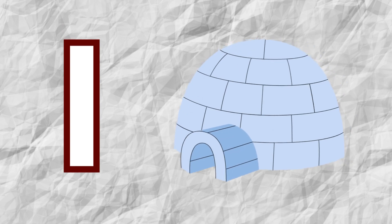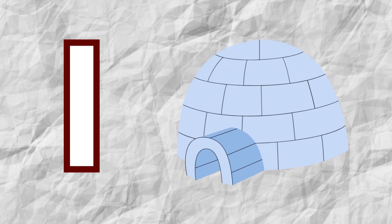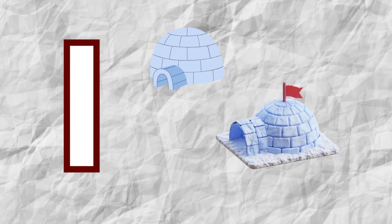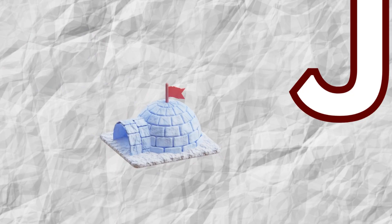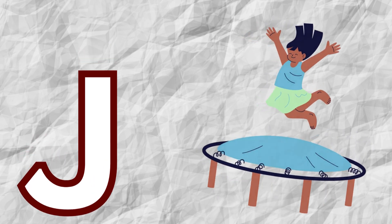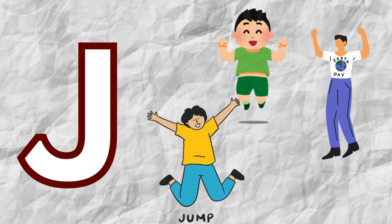I is for igloo, i-i-igloo. J is for jump, j-j-jump.